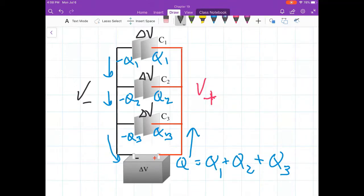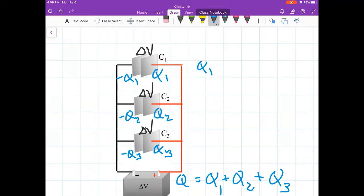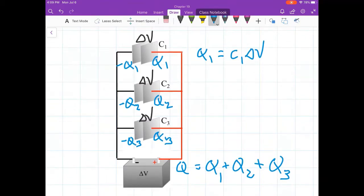Therefore, I can calculate what the charge on each capacitor is now. Let me clean up some things here, easier to write. The charge on the first capacitor, Q1, will be equal to C1 times delta V. That's one of the basic equations of the capacitor. The charge is capacitance times delta V. What about the second one? Well, Q2 is C2 delta V, same delta V. Q3, C3 delta V.